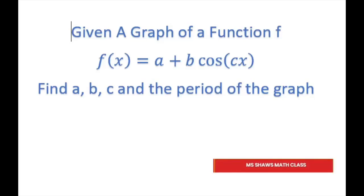Hi everyone. Given a graph of a function F, we have F of X equal A plus B cosine of CX. We're going to find A, B, C, and the period of the graph. I have several problems here — they're all basically the same. So once you get the hang of it, you could just stop the video or try to do some on your own and then see if you get the right answers.